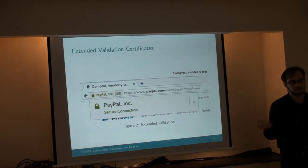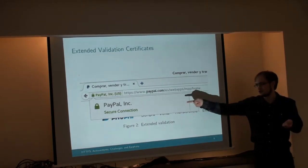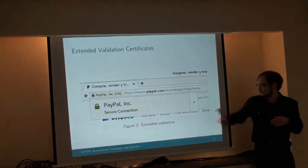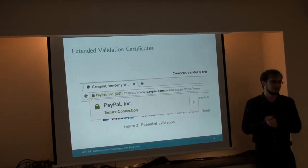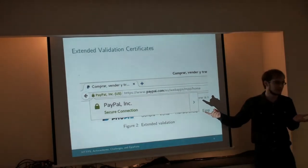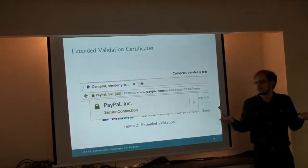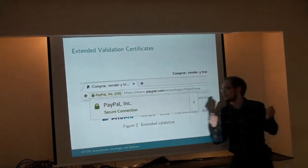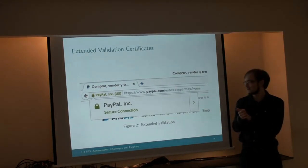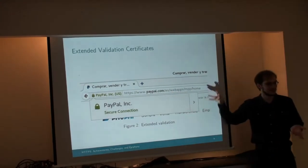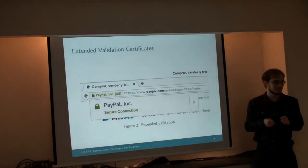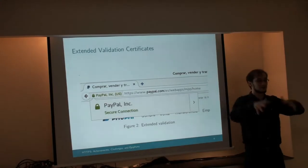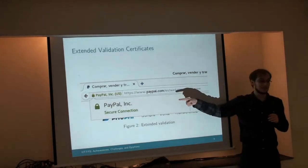Extended validation certificates go one step further and you pay extra money for them. They put your company name in the certificate — company address and such — and if you expand the signing details you can see more about the company. This is how you know you're connected to the real PayPal. That means the 1% of users who know to look for the extended validation certificate will not be fooled when they arrive at a fake PayPal attack site. They'll notice the green lock but no PayPal name, and know it's not the right site.